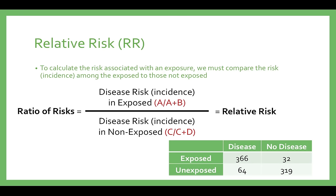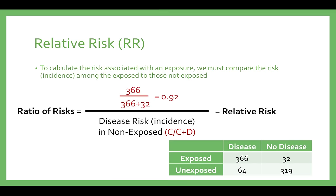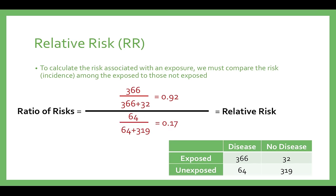In our example, the risk of lung cancer in the exposed group is 0.92. This risk is divided by the risk in the unexposed group, 0.17, for a relative risk of 5.41.